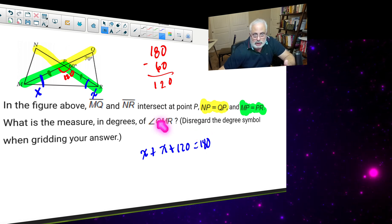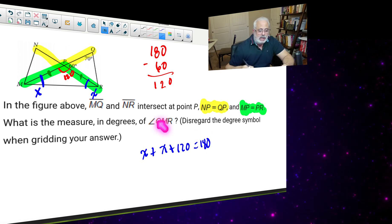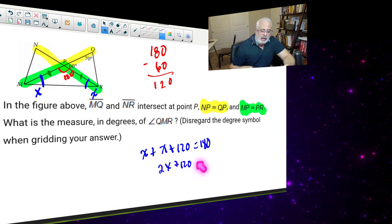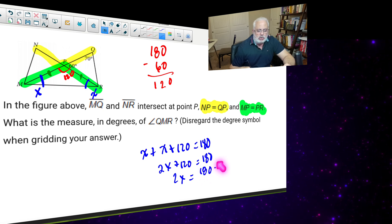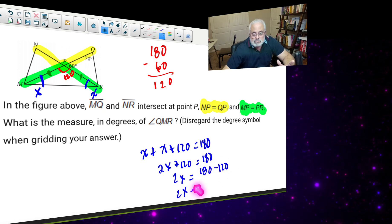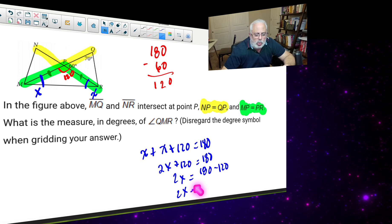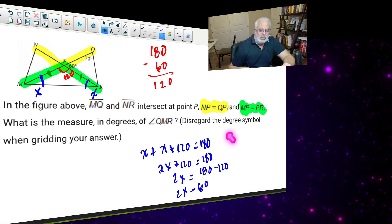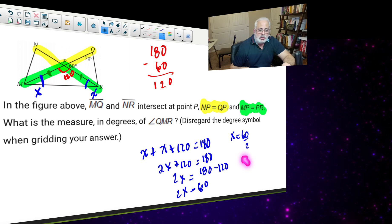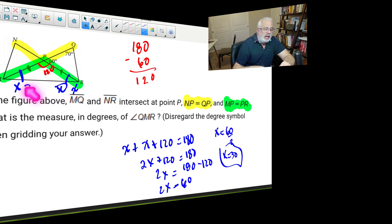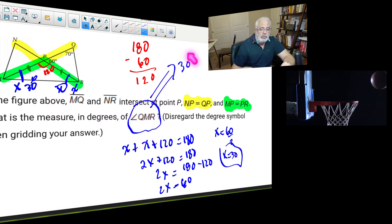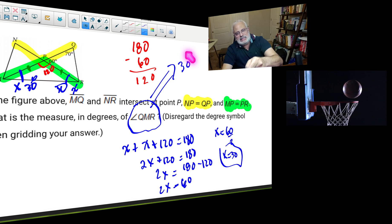And the rest is algebra, another hidden player. So you add them up, 2X plus 120 equals 180, and you solve the equation. It's 2X equals 180 minus 120. What is the answer? And then X is equal to 60 divided by 2, which is 30. So we have 30 degrees here and we have 30 degrees here, and this is the angle QMR equals 30 degrees. This is SAT geometry, difficult question, hard.